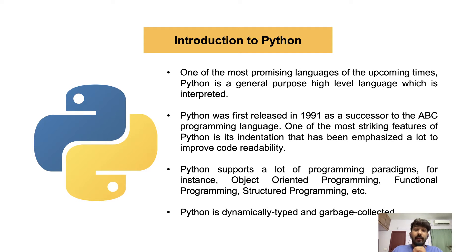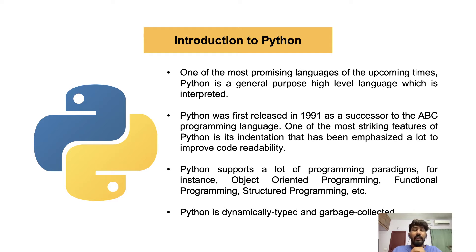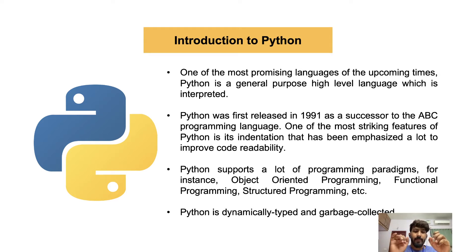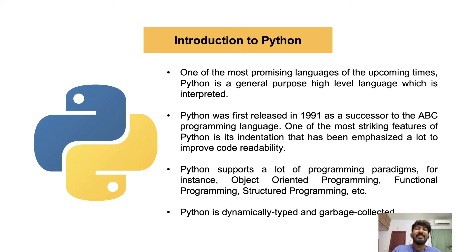Moving on to Python: it's one of the most promising languages of the current era. Even though Python is a pretty old language — first released in 1991, only about 20 years after C — it's been around for about 31 years now. It's a successor to the ABC language, a general-purpose high-level language. One of the most striking features of Python is its indentation — in C you use semicolons, but in Python you use tabs or spaces to denote different lines of code or blocks under a function or loop.